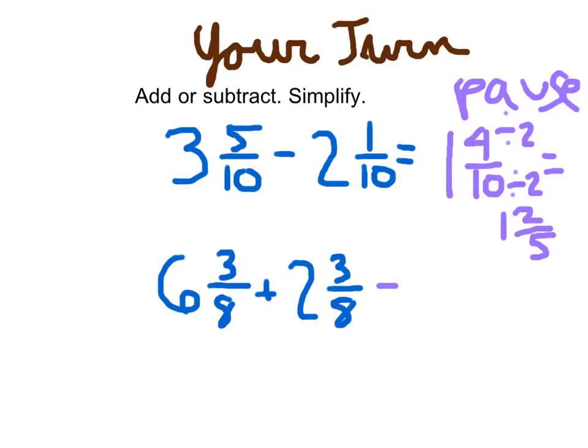For the next problem, it's an addition problem where I'm figuring out the sum of those two mixed numbers. I've got six plus two, which equals eight. And then I have three-eighths plus three-eighths, which equals six-eighths. And eight and six-eighths simplifies to eight and three-fourths. And I'll write that there.